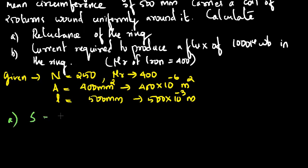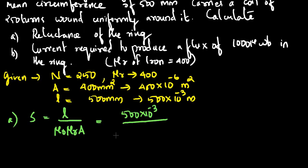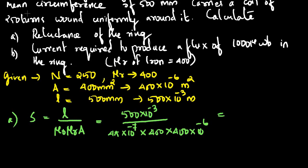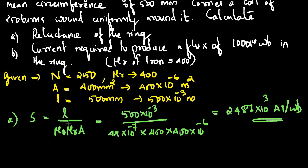Reluctance is represented by S. S is equal to L divided by μ0 × μr × A. The length is 500 × 10⁻³. μ0 × μr, with μr = 400 and area A = 400 × 10⁻⁶. Substituting all values gives S approximately equal to 2.487 × 10³ ampere turns per weber. The reluctance formula is S = L divided by μ0 × μr × A.